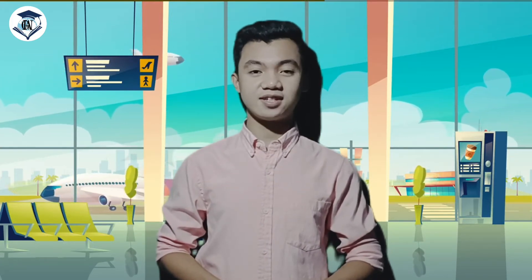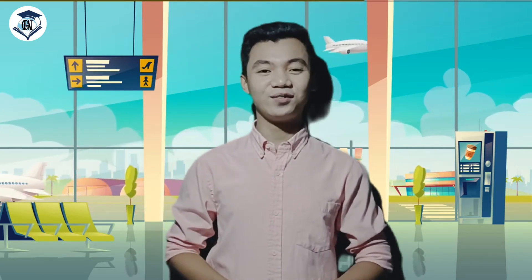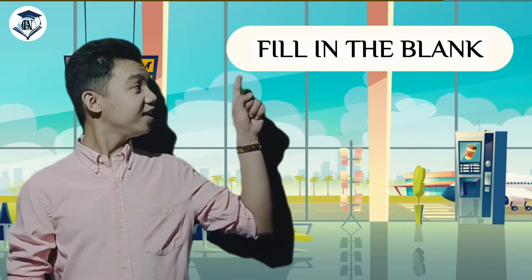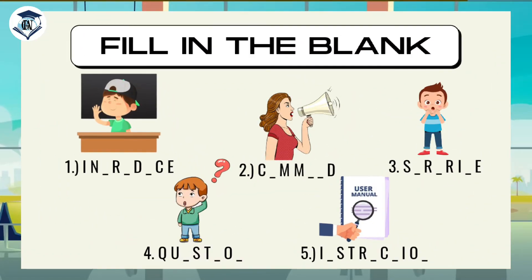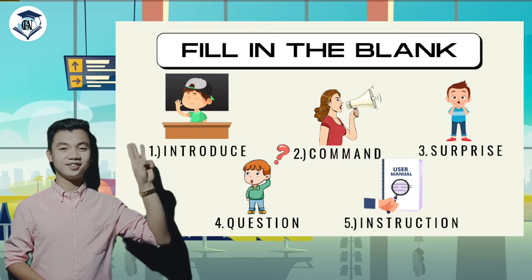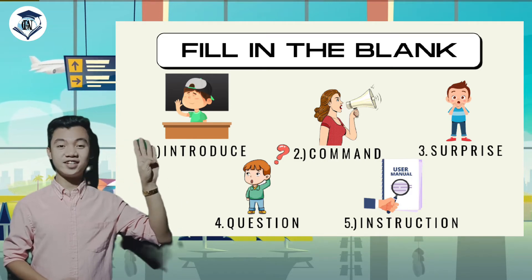Please fasten your seatbelts and store your baggage on the overhead bins and under the seats in front of you. Thank you for flying with English 7 Airlines. Enjoy your flight! Before we embark on this journey, let us first answer this fill-in-the-blank activity. Here are the answers: Introduce, Command, Surprise, Question, Instruction. Good job, kids! We are now ready to take off!